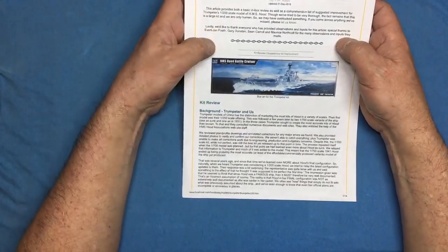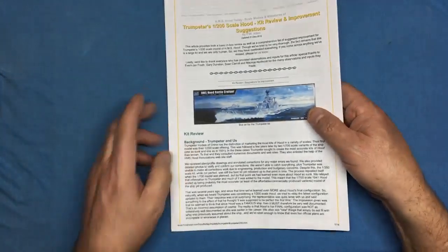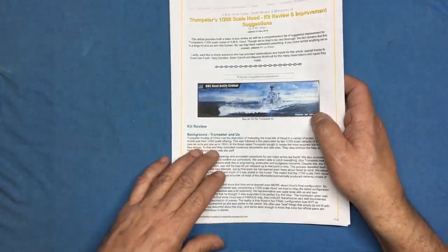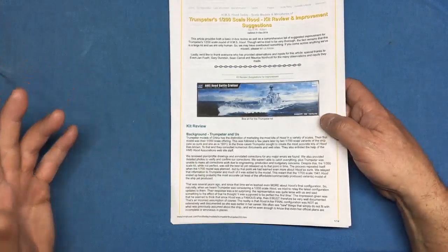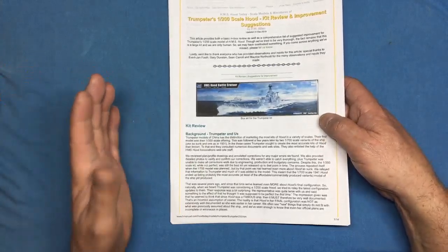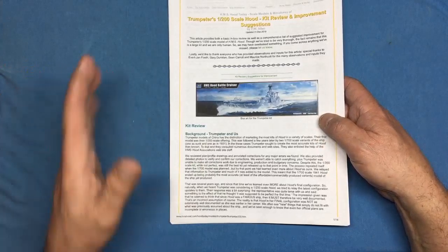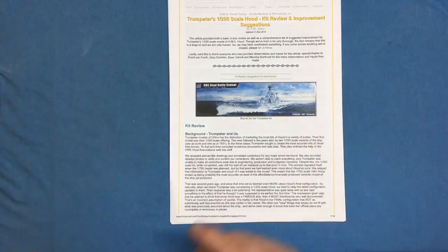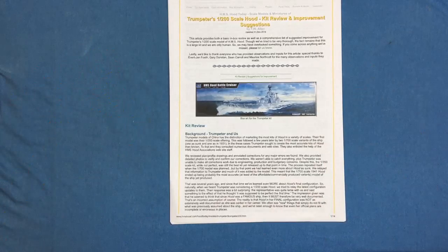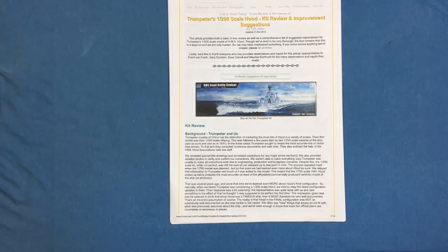This is the HMS Hood Association, and they have an absolutely amazing website with loads of information. It's obviously all about Hood and it's updated. The latest update I think was just about two weeks ago. It's very very good website for the modelers because you've got on there a list of all the kits.